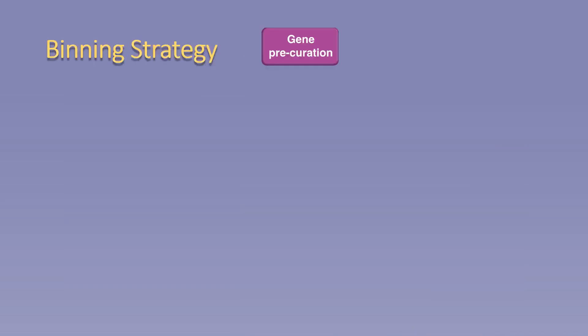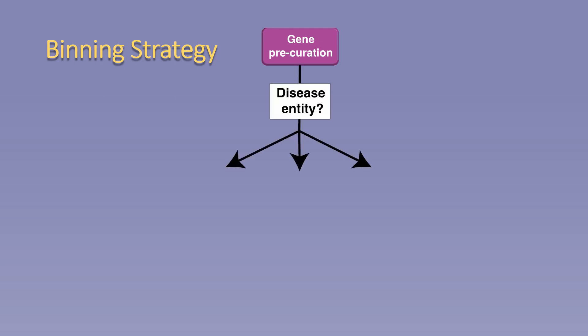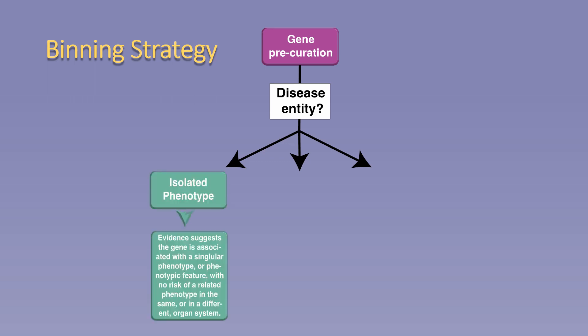Now that we have reviewed pre-curation, the next step is to determine the appropriate disease entity and nomenclature for genes in which entities have been lumped. The lumping and splitting working group has thus developed a binning strategy. At its simplest form, the binning strategy is binary: a gene may be associated with an isolated phenotype, in which evidence suggests the gene is associated with a single phenotype or phenotypic feature, with no risk of phenotypes arising in that organ system or elsewhere.